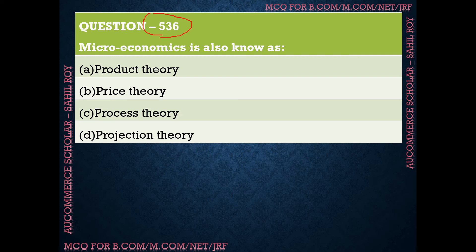Question number 536: Microeconomics is also known as — options are: product theory, price theory, process theory, or projection theory. The correct answer is option B — microeconomics is also known as price theory.